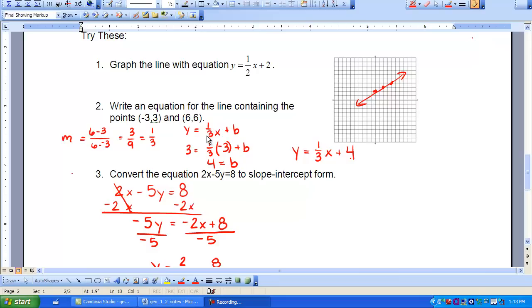So I can put that 1 third in place of M. Then I can find my B by inserting one of my coordinates, or one of my set of coordinates. So 3 is my Y, and negative 3 was my X. So a negative 3 times 1 third would give me a negative 1. If I move that over to the other side, that now makes 4 equaling B. So I can plug my slope and my Y intercept back in my equation. I get Y equals 1 third X plus 4.